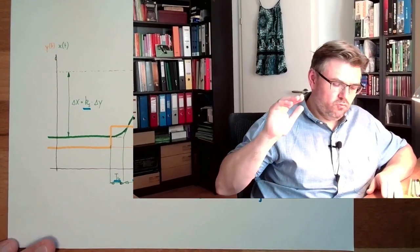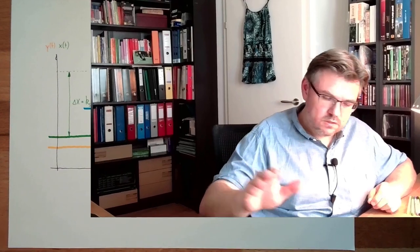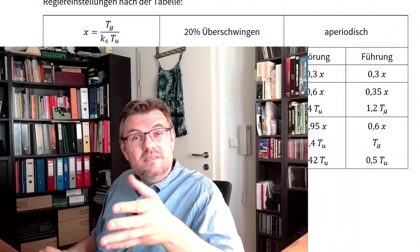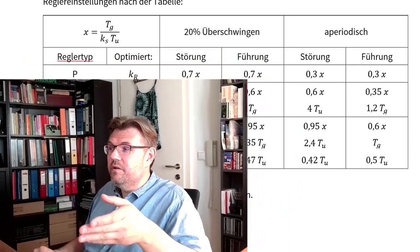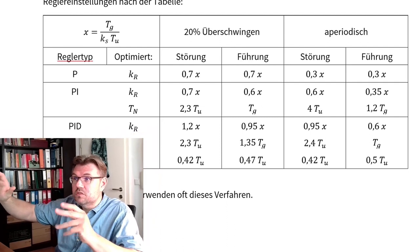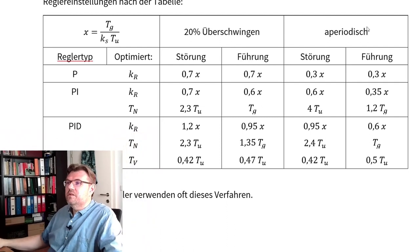They said there are some rules to do this. And I'll show you the rules on the computer. Those rules they found out in an experimental way. They said these are the rules, this is the rule set. So there is a characteristic variable which is called X, which will be calculated out of all those times and constants.